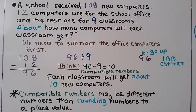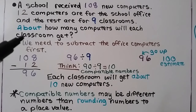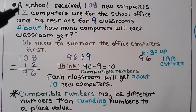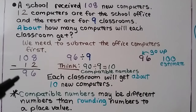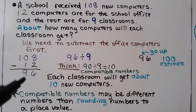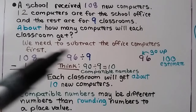A school received 108 new computers. Twelve computers are for the school office and the rest are for nine classrooms. About how many computers will each classroom get? First, because we need to find how many go to classrooms, we subtract the ones going to the office: 108 minus 12 equals 96. So 96 computers are going to the classrooms, and we need to estimate how many will go into each of the nine classrooms.